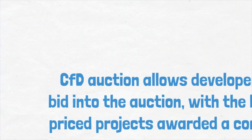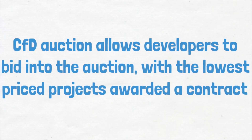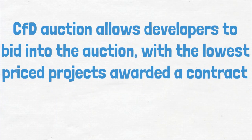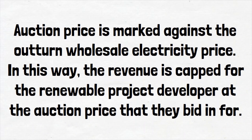The CFD auction allows developers to bid into the auction, with the lowest priced projects awarded a contract. In this way, developers bid in at a price, denoted in pounds per megawatt hour, that they require to make the project financially feasible. When the project is then built and becomes operational, this auction price is marked against the outturned wholesale electricity price, and the revenue is capped for the renewable project developer at the auction price that they bid in for.